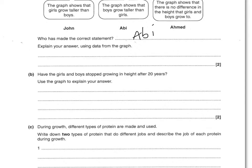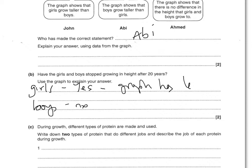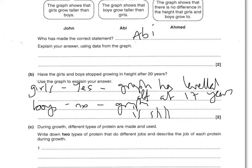Have girls and boys stopped growing in height after 20 years? Use the graph to explain your answer. There are two marks — one for girls and one for boys. For girls: yes, the graph has levelled off, or they stopped growing around 17 years. For boys: no, because the graph has not levelled off — it is still rising. So girls: yes, graph levelled off at around 17 years. Boys: no, graph is still rising.